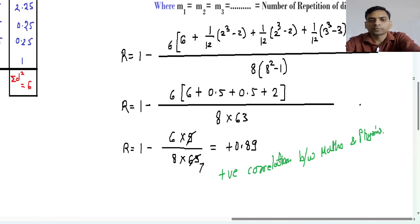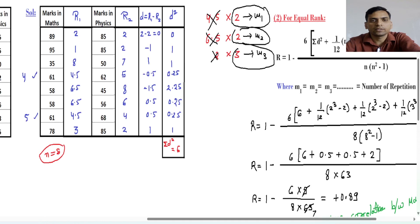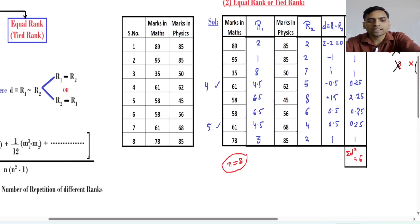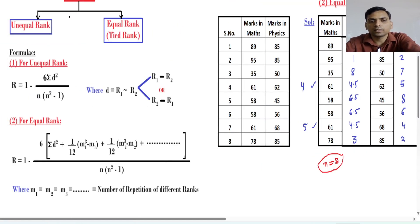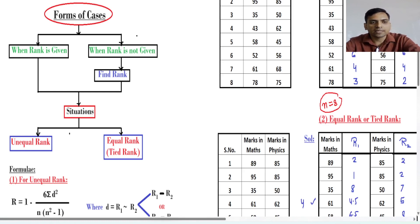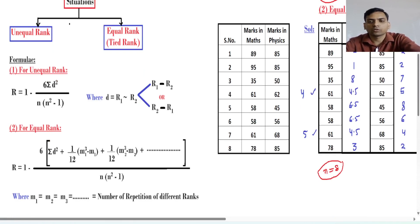This is the concept of rank correlation. This is the second part — when ranks are equal (tied). In the overall concept of Spearman's R, there are two forms: first, when rank is already given — then directly apply the formula; second, when rank is not given — you find the ranks, check if they are unequal or equal, and apply the appropriate formula. I hope you understand this concept. Please like this video and subscribe to my channel. Have a nice day. Thank you.